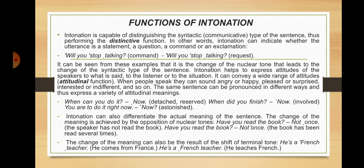Have a look at these examples: 'When can you do it?' Intonation can also differentiate the actual meaning of the sentence. The change of meaning is achieved by the opposition of nuclear tones. For example: 'Have you read the book?' — 'Not once.' With one intonation, the meaning is that the speaker has not read the book. With a different intonation: 'Have you read the book?' — 'Not once' — the meaning is that the book has been read several times.